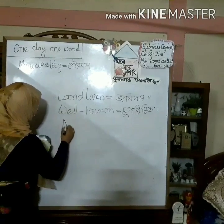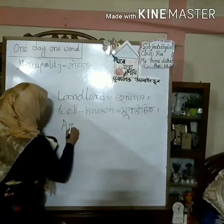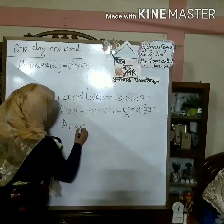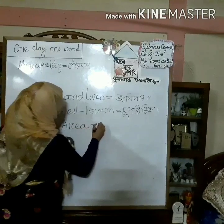Area. Spelling: A-R-E-A. That means 'elaka' (locality/region). Area means elaka.